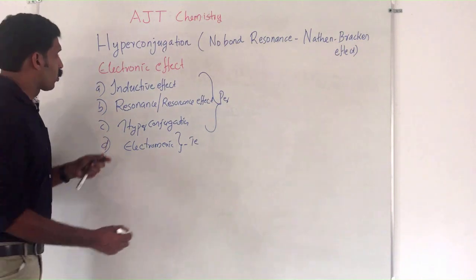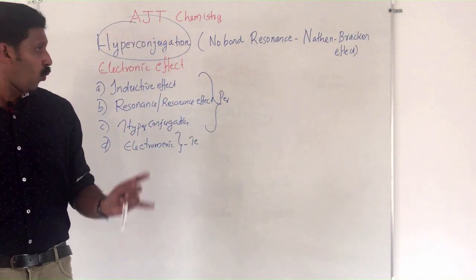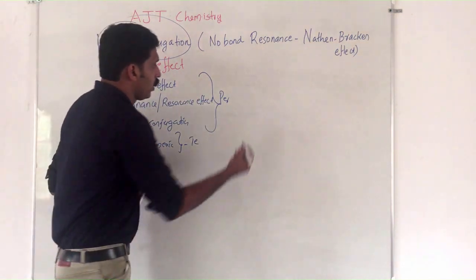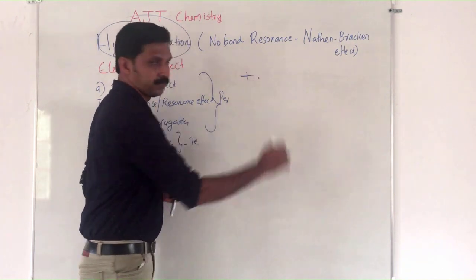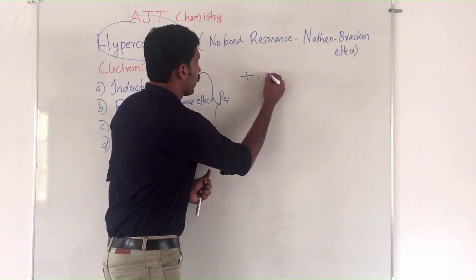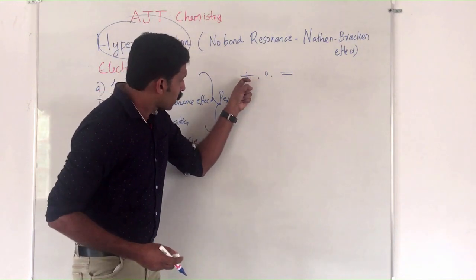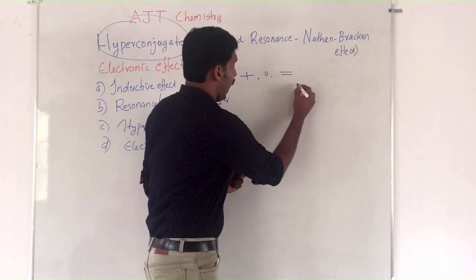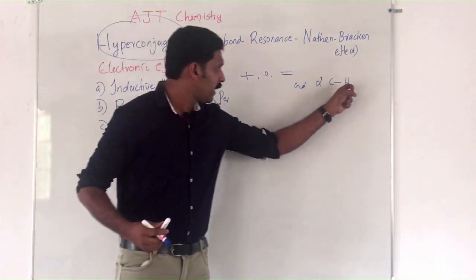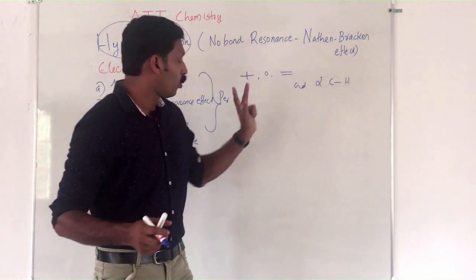Now let us look at the hyper conjugation effect. What is the condition for a molecule to show this hyper conjugation effect? The molecule should have either a positive charge — we call it a carbocation — or a free radical, or a double bond, meaning alkenes. So either carbocations, free radicals, or alkenes, having an alpha C–H bond, can show hyper conjugation.